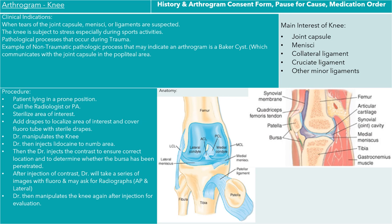The main areas of interest in the knee are the joint capsule, menisci, collateral ligaments, cruciate ligaments, and other minor ligaments. For the procedure, your patient will be lying in the prone position. You'll call your radiologist or PA, sterilize the area, add drapes to localize the area of interest, and cover the fluoro tower with sterile drapes. The doctor may manipulate the knee, then inject lidocaine to numb the area, then inject contrast to check location and determine whether the bursa has been penetrated. After injection, the doctor will take a series of images with fluoro and may ask for AP and lateral radiographs, and may manipulate the knee again after the injection.